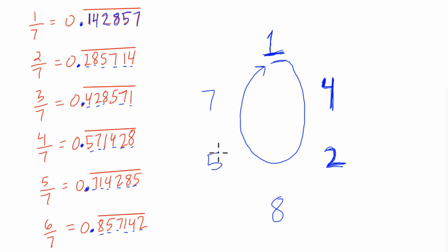And for 4 sevenths, we start over here at 5, and follow around in a full circle clockwise to 7, 1, 4, 2, 8. And we have that here. And for 5 sevenths, we start at 7, and then go around clockwise to 1, 4, 2, 8, 5, and that's our pattern.